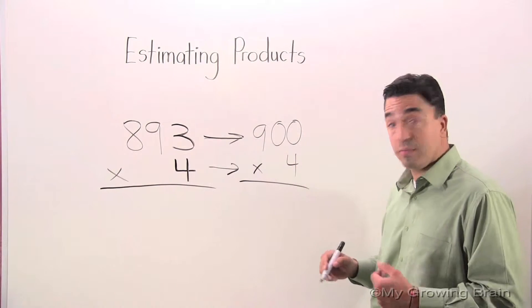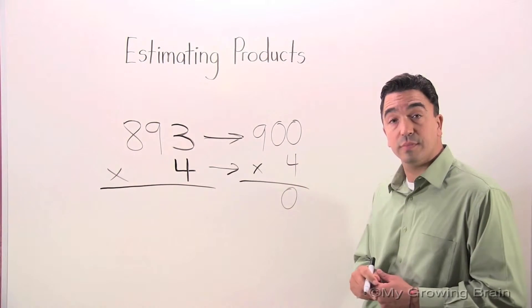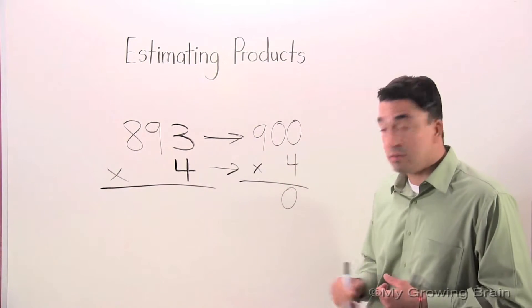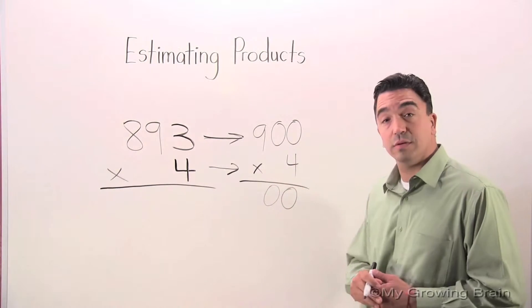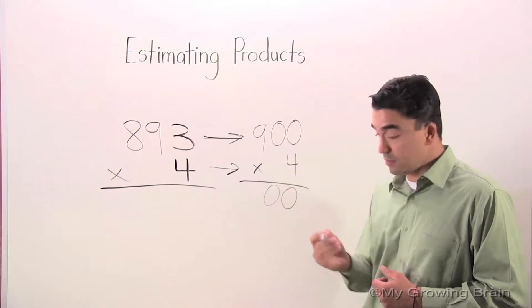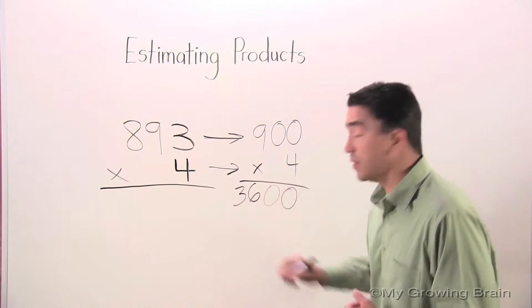4 times 0? 0. 4 times 0? 0. 4 times 9? 36.